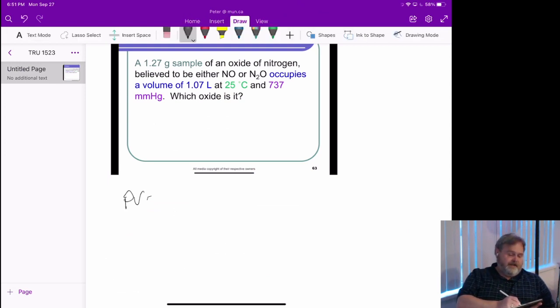If PV equals NRT, then N equals PV over RT. All good.